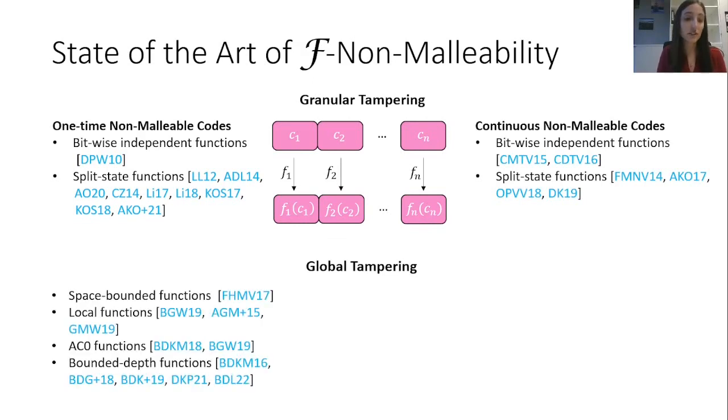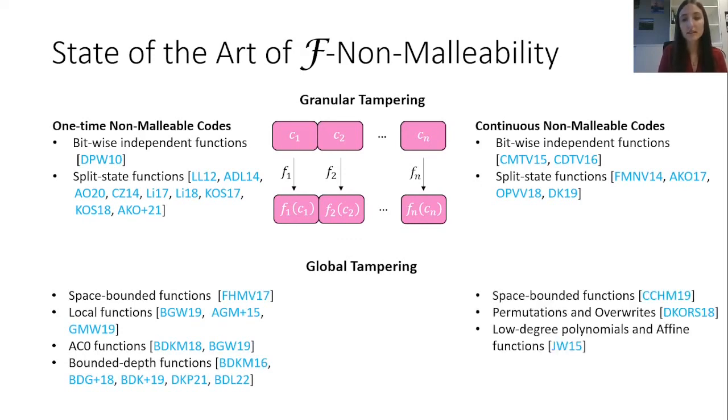When one moves to the more general case of global tampering, many interesting constructions are available in the one-time scenario. On the other hand, when considering continuous non-malleability, not many of these constructions were extended. Our work aims to close this gap by investigating the possibility of continuous non-malleable codes for large global tampering families, such as local functions, AC0 functions, and bounded depth functions.